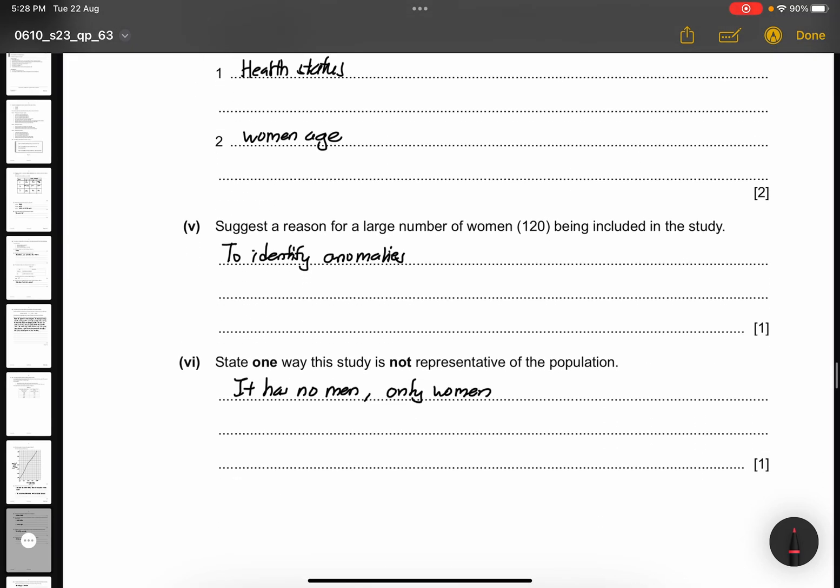Part 5. Suggest a reason for a large number of women being included in the study. So, it's to help to identify anomalies. So, this is an example of why you need to have a large sample size or representatives, so that you can easily identify anomalies. Part 6. State one way this study is not representative of the population. Because it has no men, it only has women. If you have both of them, then you can say this is a population.